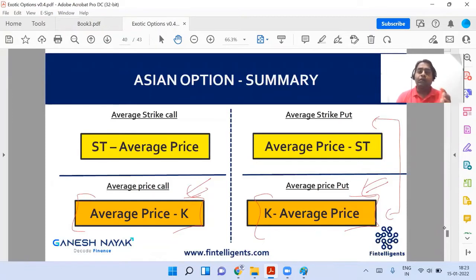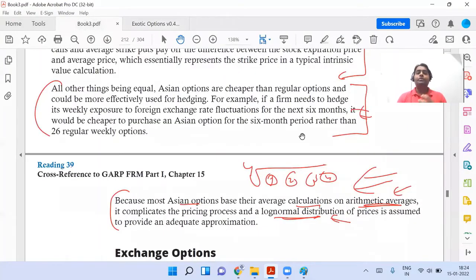So if you're owning this average price call and average price put, then the option has to be cheaper because you're going to make money very slowly. Is everybody able to understand this? Because it is not a normal stock price. It is an average price. And obviously, average price will move. Change will happen very slowly, right? So obviously, the option price will be cheaper, will be cheaper in that case as compared to the regular option.